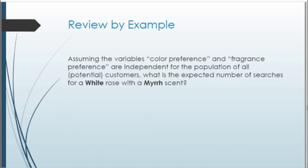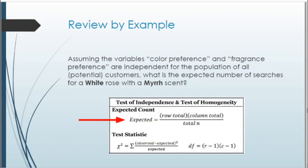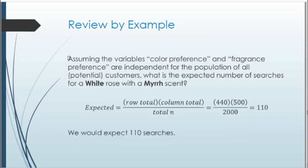Next: assuming the variables color preference and fragrance preference are independent for the population of all potential customers, what is the expected number of searches for a white rose with a myrrh scent? For a test of independence, expected counts equal row total times column total divided by the grand total N. The row total for myrrh is 440, and the column total for white rose is 500. So the expected count is 440 times 500 divided by 2,000, which gives us an expected count of 110.